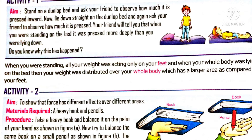It is because when you are standing, all your weight acts on your feet, and that is what causes the bed to press inwards more. When you are lying on the bed, the whole weight is distributed all over your body, which has a larger area compared to your feet. That is why when you lie down, the bed is pressed less deeply.